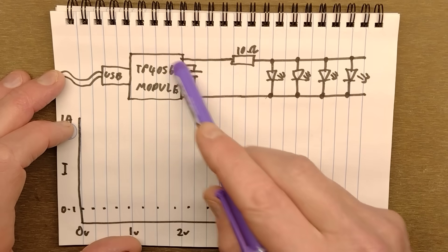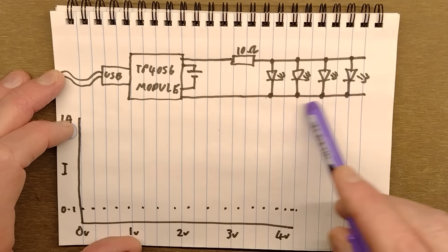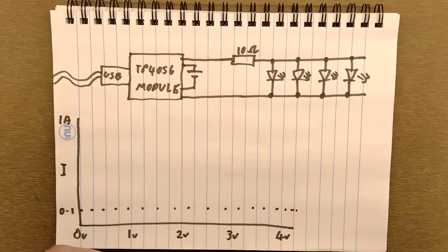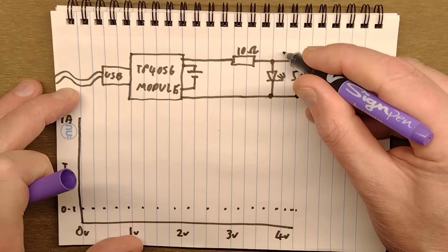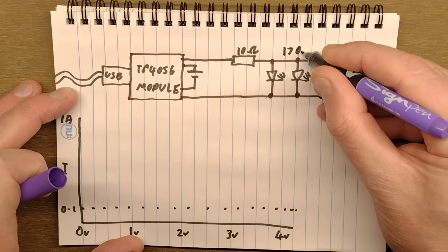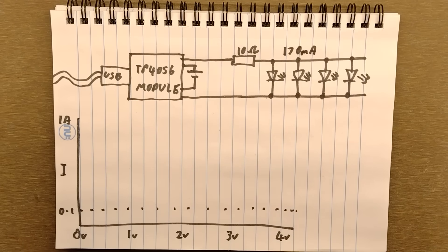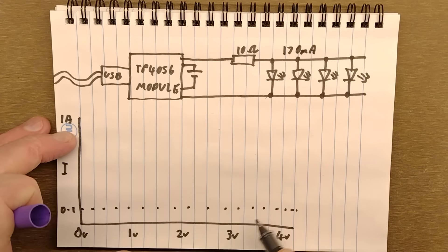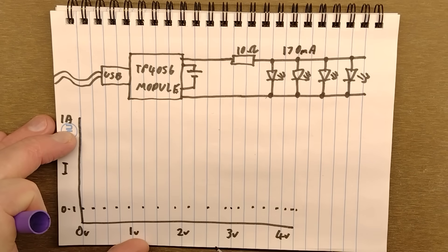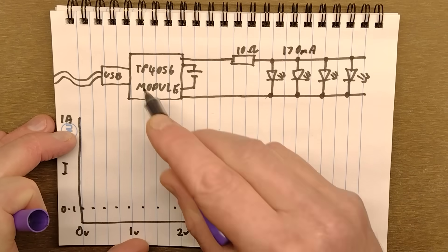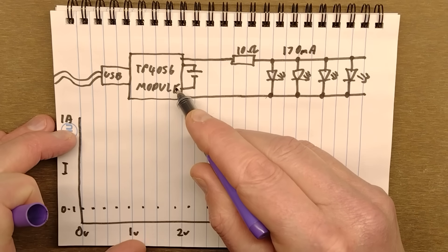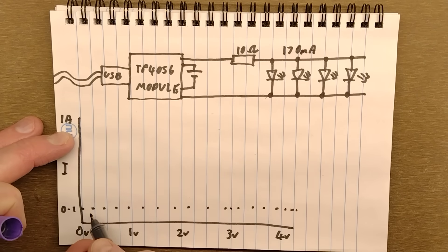In the case of using one of those modules and connecting some LEDs with a 10 ohm resistor, the current here would be typically driving this string of LEDs. It would be about 170 milliamps with a fully charged cell. When you start charging, if the voltage is anywhere below three volts,